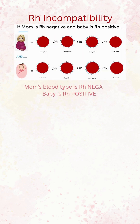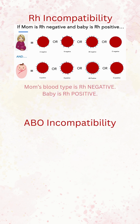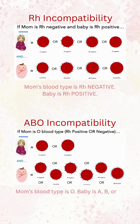So with RH incompatibility, mom is RH negative and baby is RH positive. And with ABO incompatibility, mom's blood type is O, and baby is A, B, or AB.